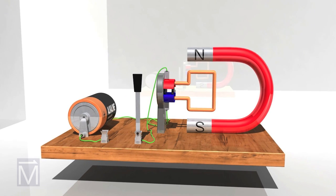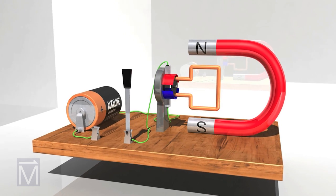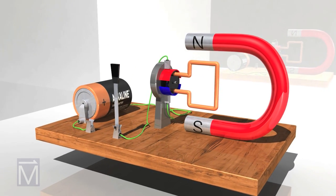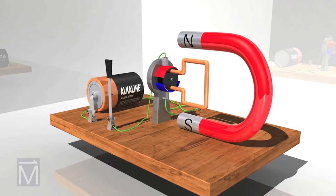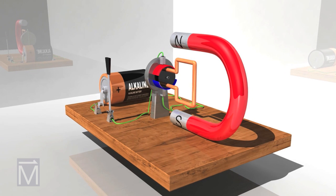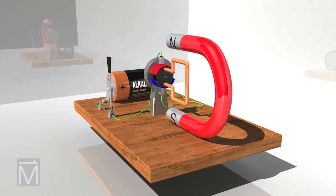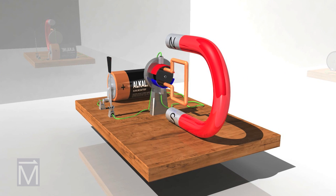Motors convert electrical energy to mechanical energy with the help of magnets. DC motors are one type of motor and are often used in toys, appliances, and radio-controlled cars or boats.